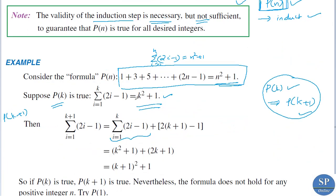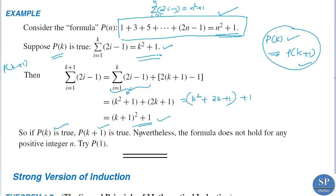This gives k squared plus 1 plus 2k plus 1, that is k squared plus 2k plus 1 plus 1, which is (k+1) squared plus 1. So if P(k) is true then P(k+1) is also true — the induction step holds. However, the formula is not true for any integer n.